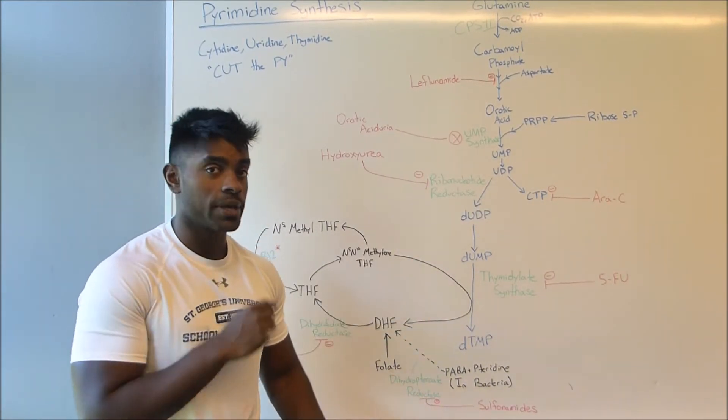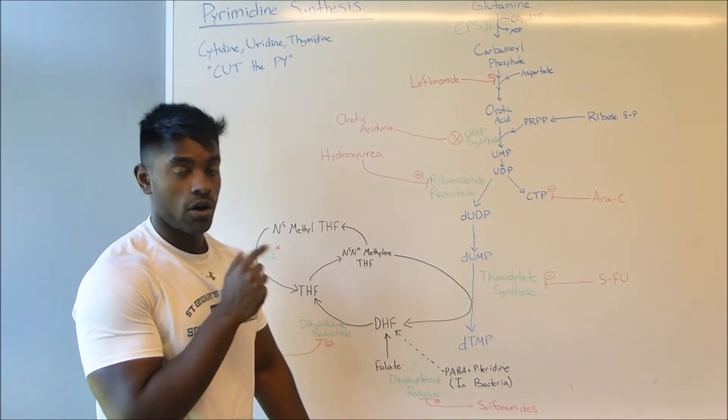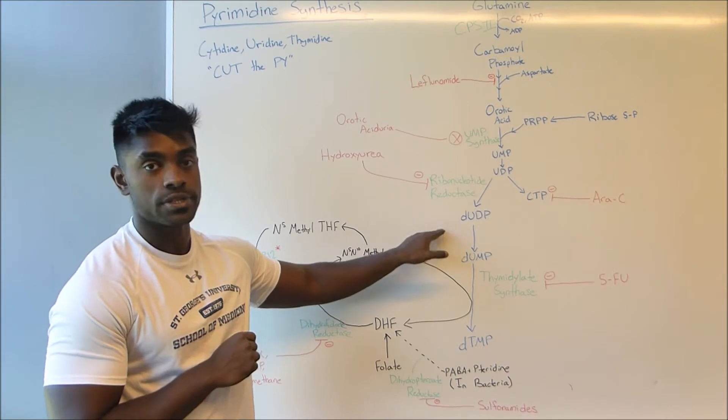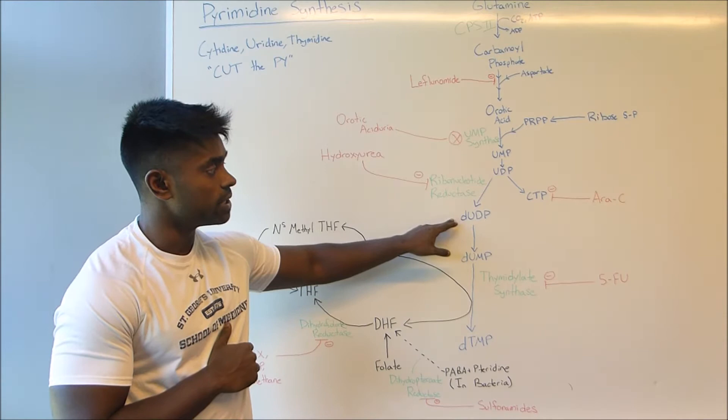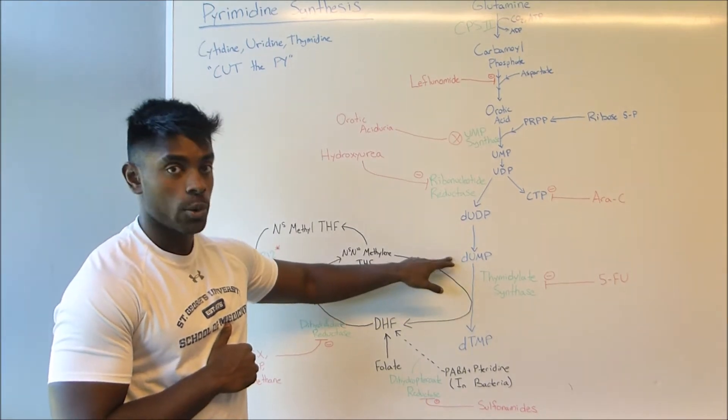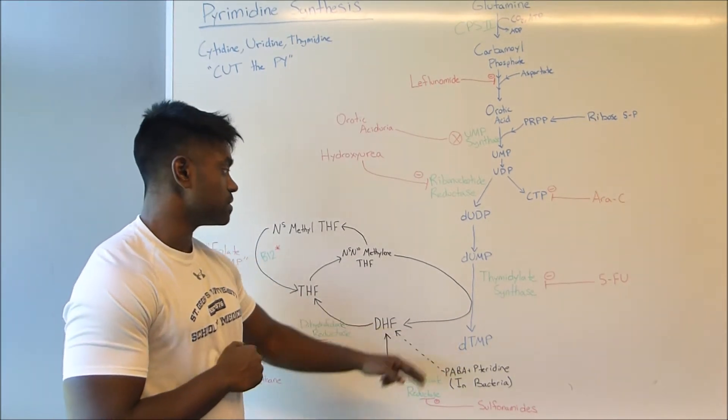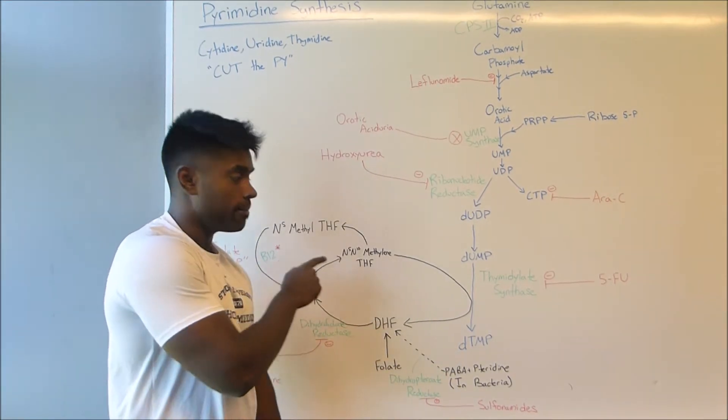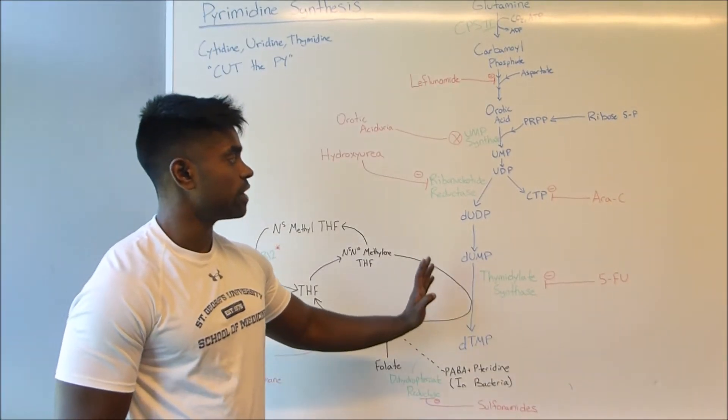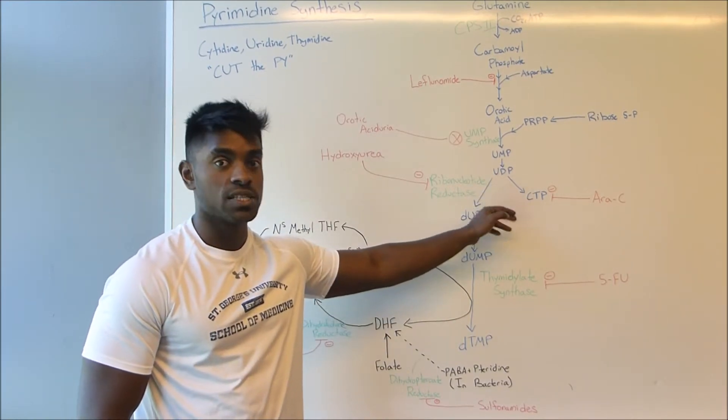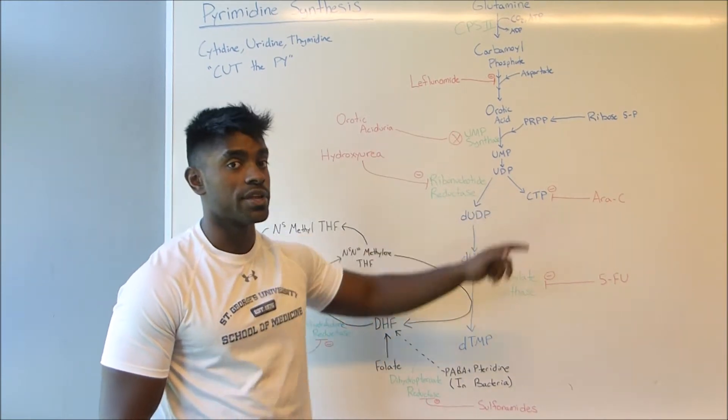Next, a phosphate group is going to be added to form UDP. Then UDP is going to be deoxygenated to form deoxy UDP using the enzyme ribonucleotide reductase. Next, dUDP is going to be converted to dUMP. And finally, dUMP is going to be converted to dTMP using N5-N10-methylene THF and the enzyme thymidylate synthase. Also another pathway stemming from UDP as we can see is of course to form the pyrimidine cytidine which is going to be occurring on this side.